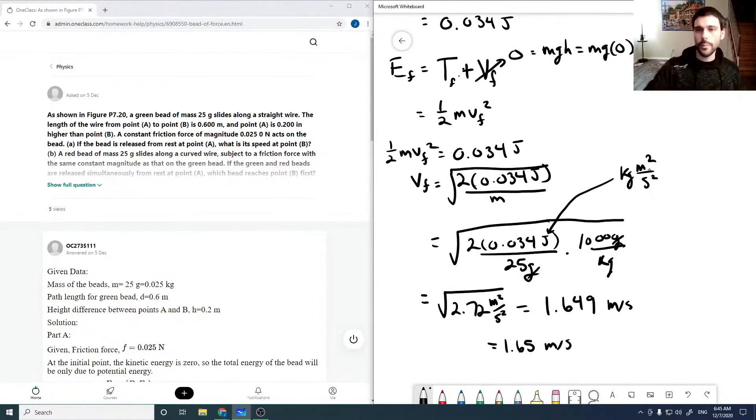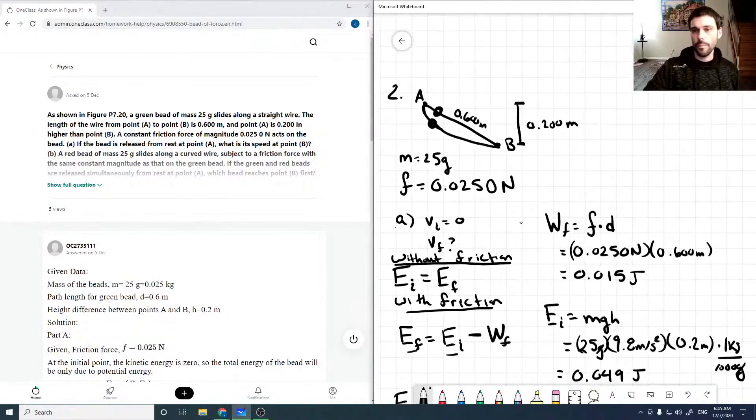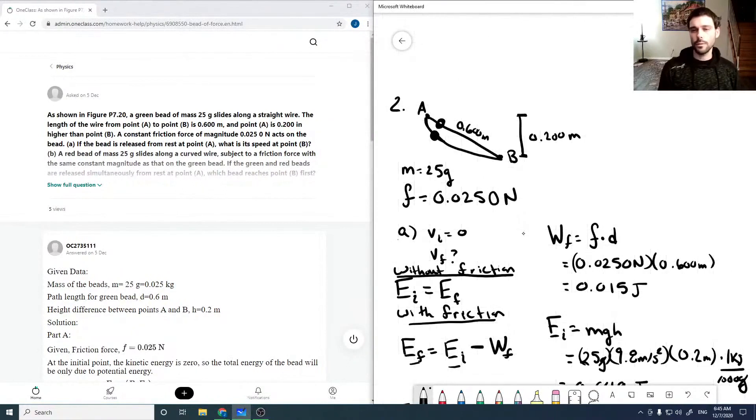And then part B of the question just asks if a bead is released from rest along this path or this path, which will arrive at B faster. Now this one's a little tricky. Because without friction, the lower bead should arrive faster as it reaches its terminal velocity at a higher rate. Therefore traveling in the end along B faster.